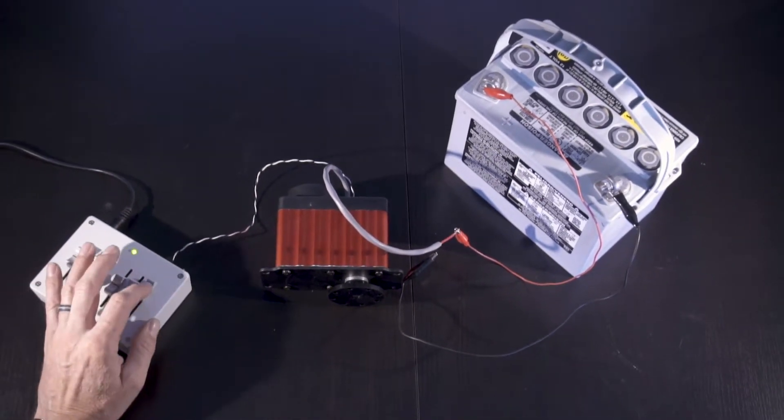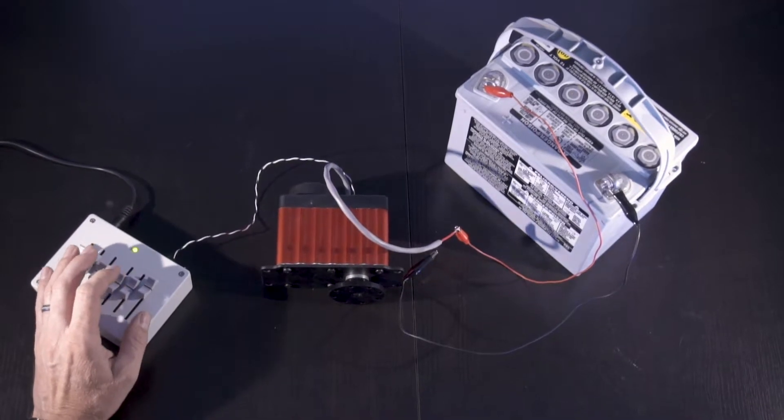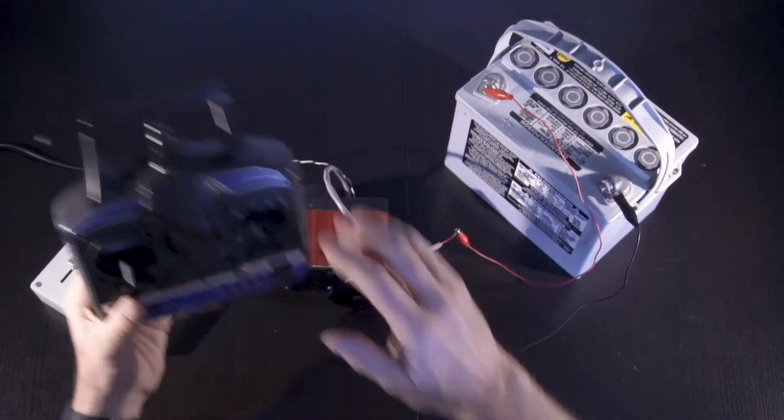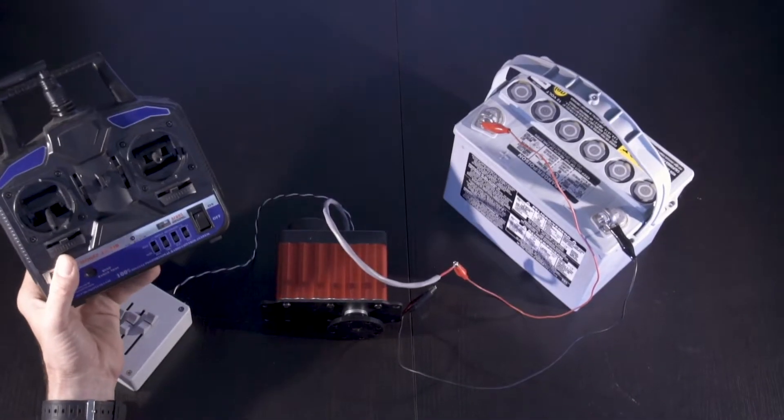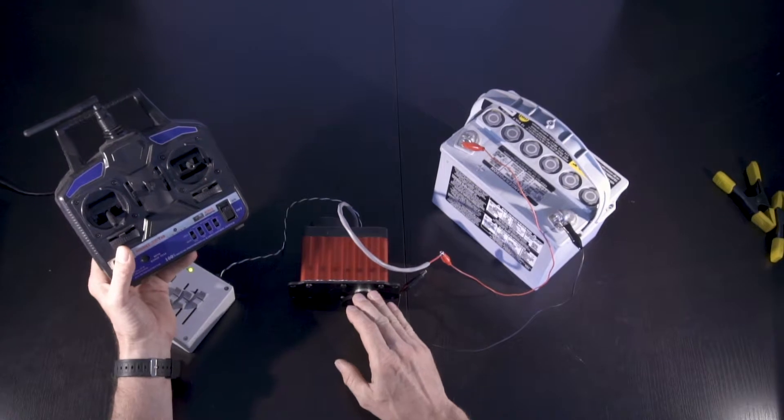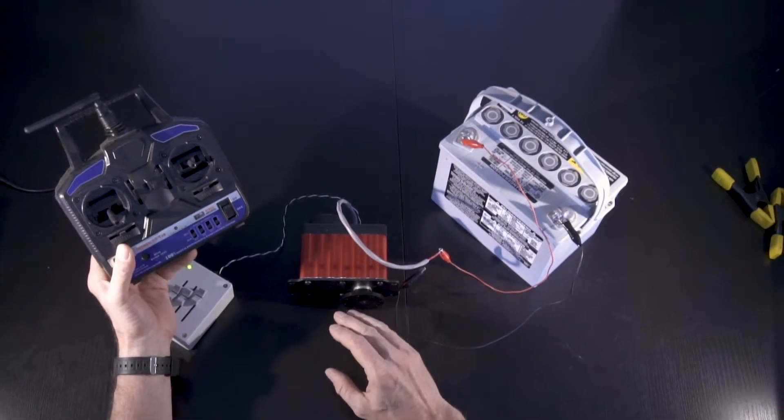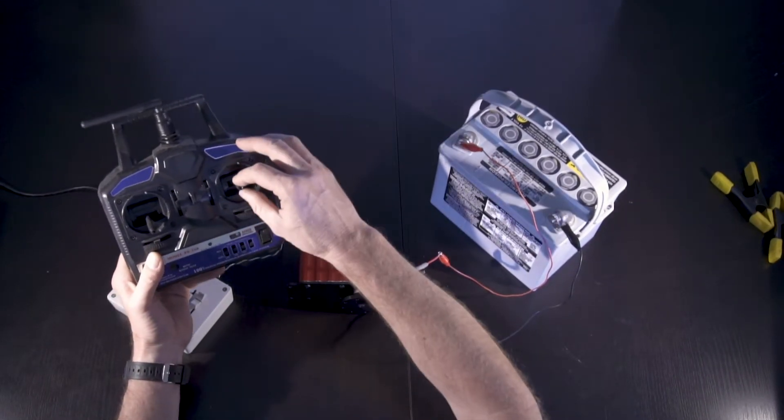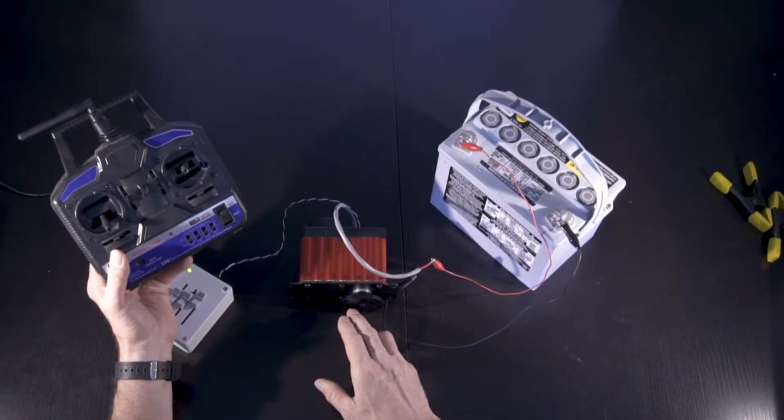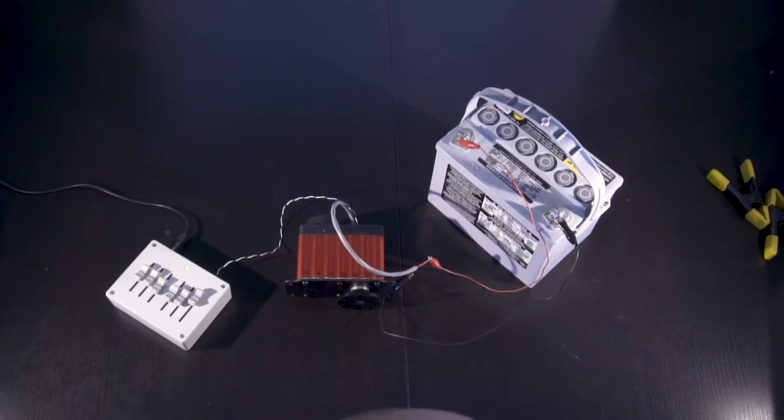So a lot of the hobby radios only can provide a 90 degree signal, but you might want 270 degrees of travel out of your servo. We sell servos also that scale the input signal. So this device might give it a 90 degree signal and our servo would do 270 degrees of travel. So that's also available.